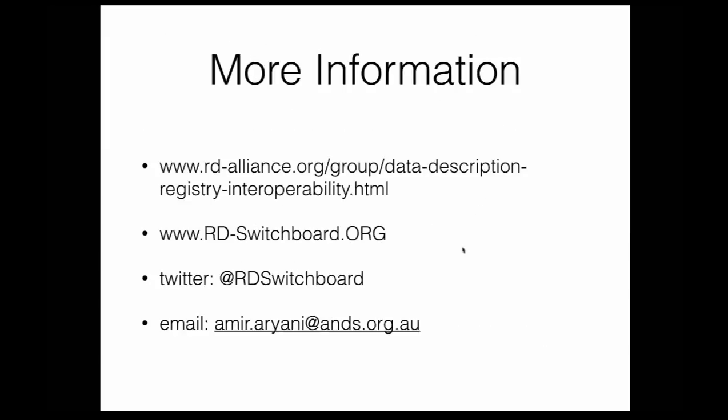To get more information about this, we have the researchdataswitchboard.org website, which provides information about the project. There will be new updates very soon about the release date and other infrastructure components. I realize I missed the GitHub repository link in this slide, so I will post that into the chat. There is a Twitter handle for this project, and you can send me an email. The RDA Alliance working group is a core part of the activities that formed this project — you can join the group. Close to the next plenary in September in Europe, there will be more presentations and talks about the progress.